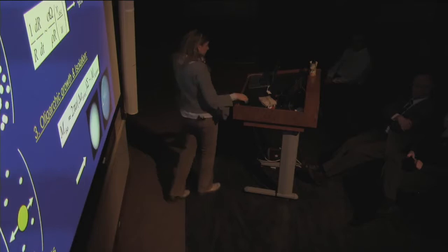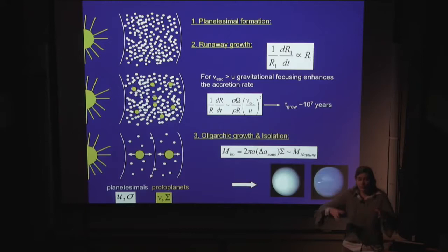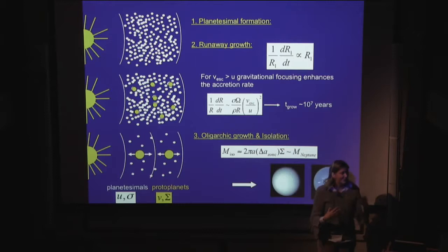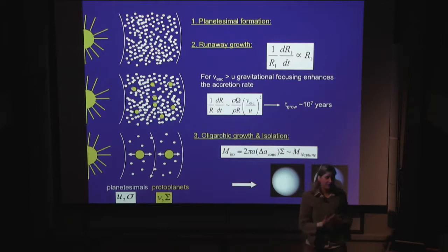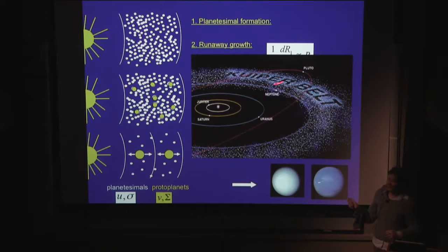The low velocity dispersion of the planetesimals is what allows runaway growth. Although runaway growth is not very efficient in converting all of the mass into big protoplanets, it's crucial because it can form a few larger planetary embryos in a short amount of time. In planet formation, it's always a race against time, because gas dissipates on a few million-year timescales and we need to form planets as big as Jupiter in that timescale. Also, our Kuiper Belt is thought to have been stuck at the end of runaway growth, and the observed size distribution of large Kuiper Belt objects nicely fits our models of runaway growth.